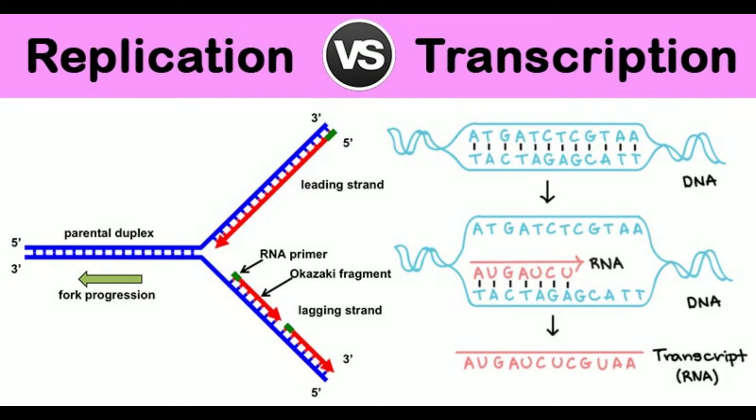DNA Replication versus Transcription: Definition and 23 Differences. DNA replication and transcription are fundamental genetic processes that are essential for cell growth and division. Both processes involve the generation of a new molecule of nucleic acids, either DNA or RNA.